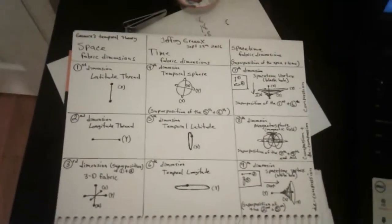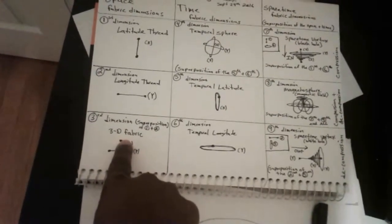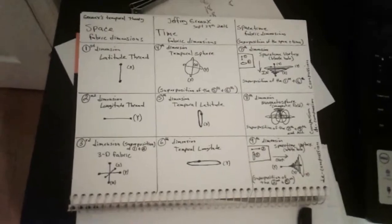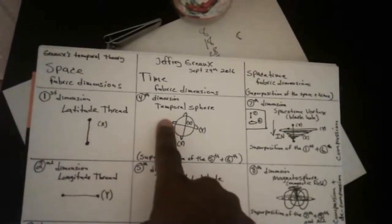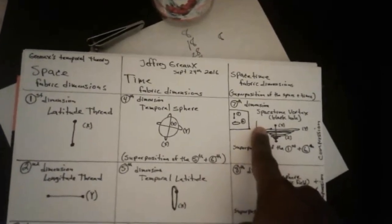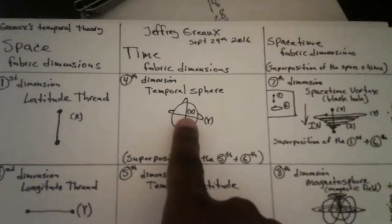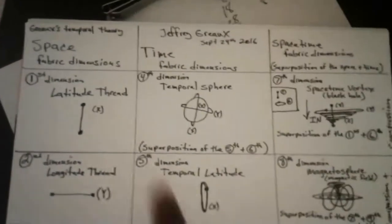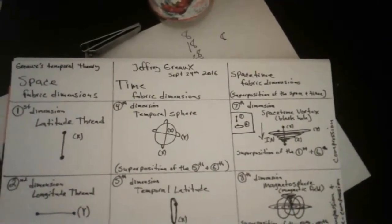I wanted to show you something interesting. I told you this chart is like the Encyclopedia Britannica — it can tell you volumes of information. We see the superpositions: the first position, second position, and three-dimensional space. But according to this chart, it's much more than that. If we look at this chart going across, we have the latitude thread, temporal sphere, and a space-time vortex going in. What happens if you put all three of these together? You would get a planet with an axis and a gravitational pull.